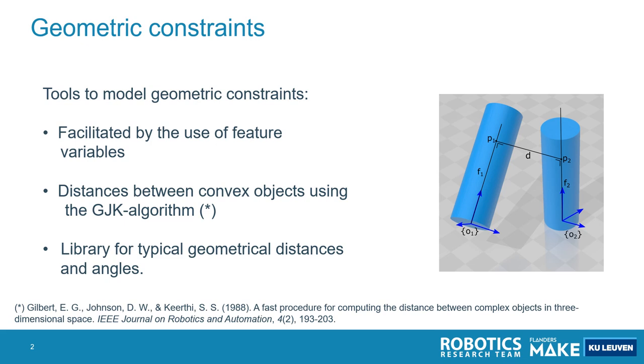You can also use the methodology of ITASC, the virtual kinematic chain, if you want to model a complex contact situation. Distances between complex objects can be computed using the GJK algorithm, and a library for typical geometric distances and angles is available.